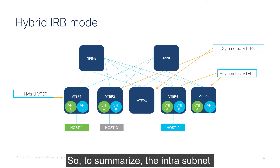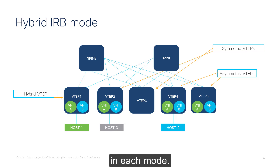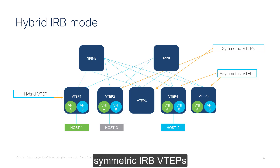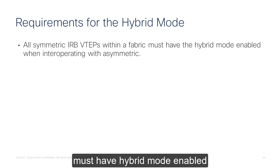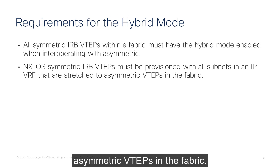To summarize, the intra-subnet approach is the same, so any traffic within the same subnet between symmetric and asymmetric VTEPs will work. However, inter-subnet routing requires a very different approach in each mode and hence interoperability there is not possible. With hybrid IRB mode, we use the existing symmetric IRB VTEPs and integrate them with the asymmetric VTEPs. A key requirement is that all symmetric IRB VTEPs within the fabric must have hybrid mode enabled when interoperating with asymmetric VTEPs, and symmetric VTEPs must be provisioned with all subnets in an IP-VRF that are stretched to asymmetric VTEPs in the fabric.